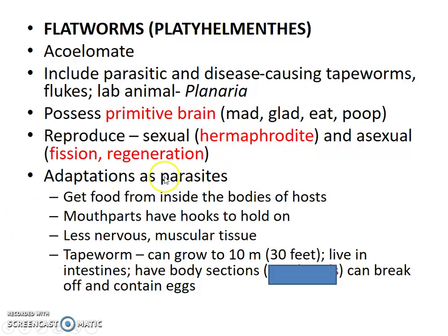As parasites, these get food from inside the body of the host. Their mouth parts have hooks on them to help hold on, because they hook onto the intestinal system. Your intestines have continuous wave-like contractions called peristaltic contractions, and it's not beneficial if they get swept along and excreted. The majority of their body is just reproductive tissue. For example, the tapeworm can grow up to 10 meters — 30 feet. The body sections of the tapeworm are called proglottids, and those proglottids contain tapeworm eggs, so they can break off and make new baby tapeworms within the body.